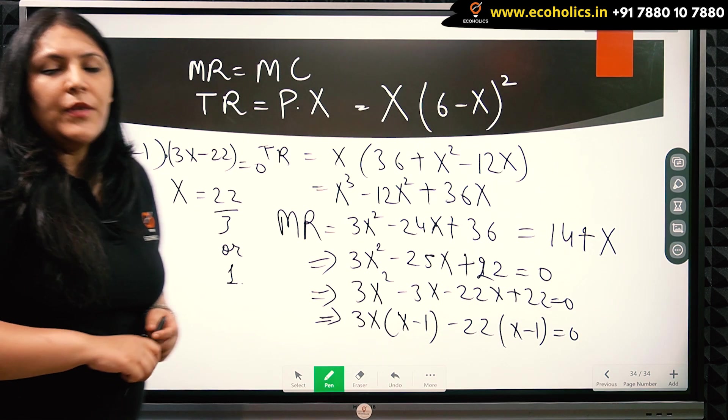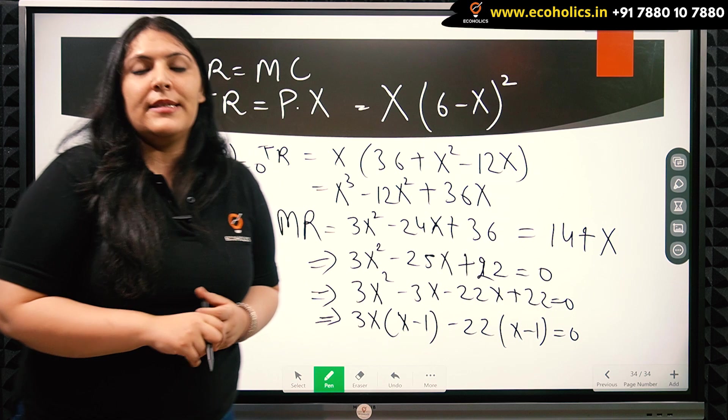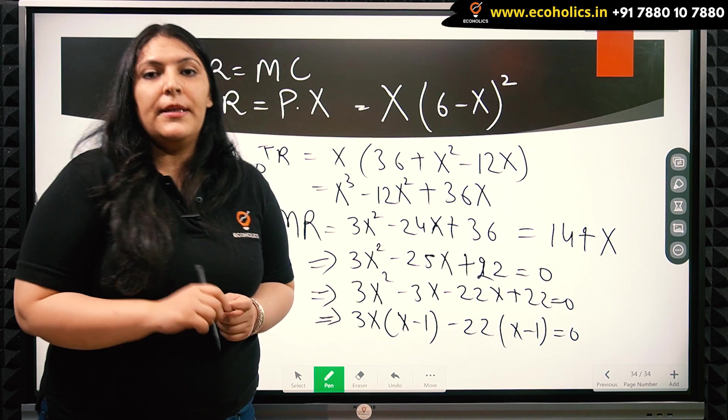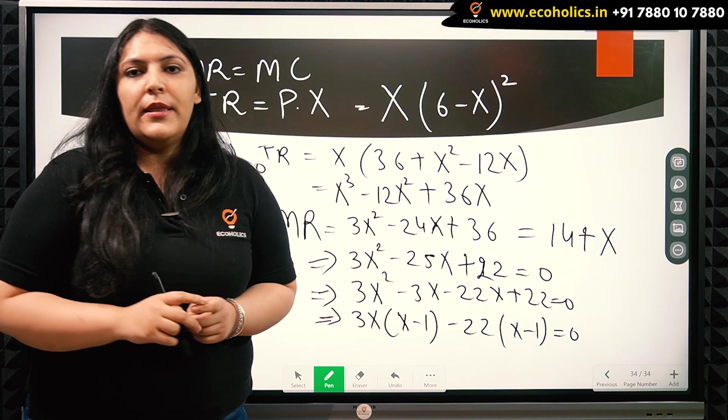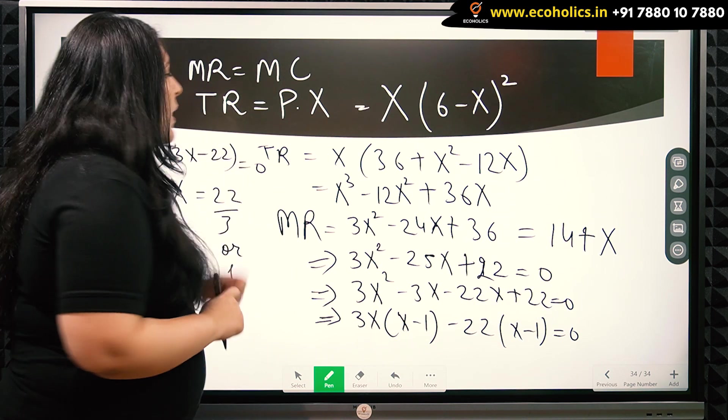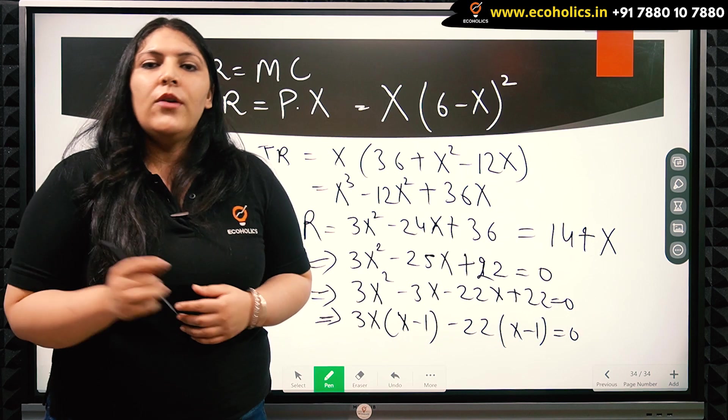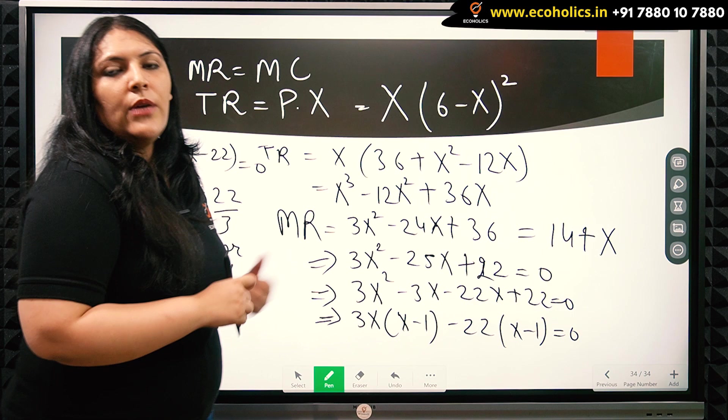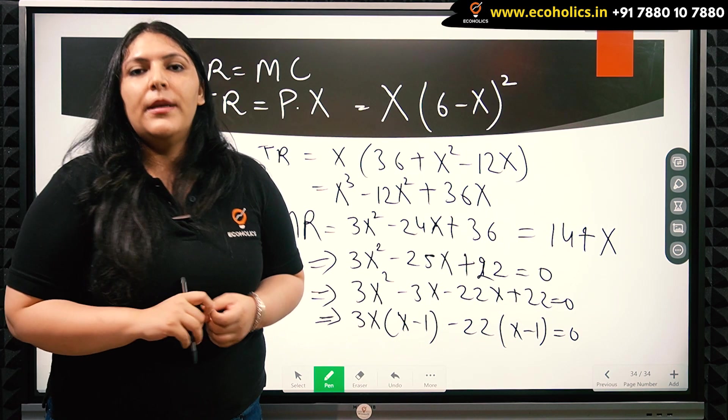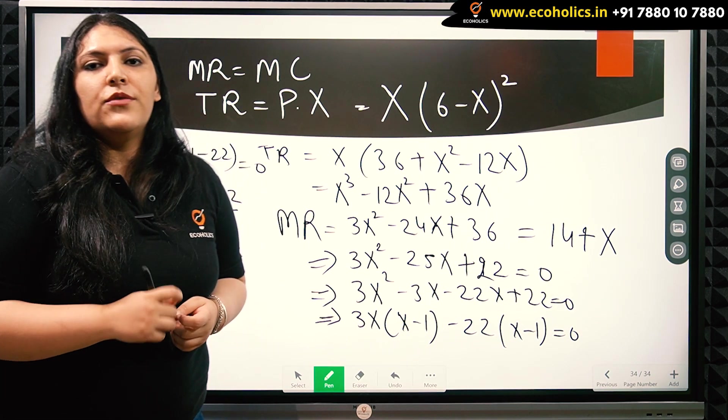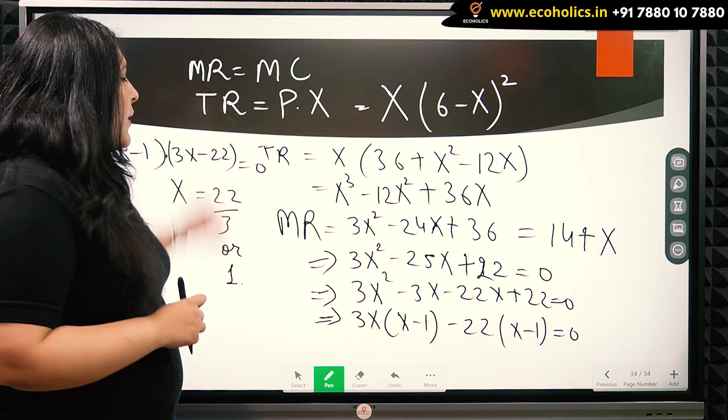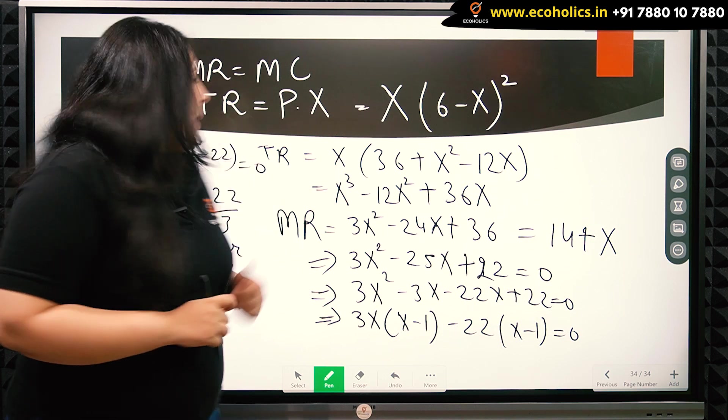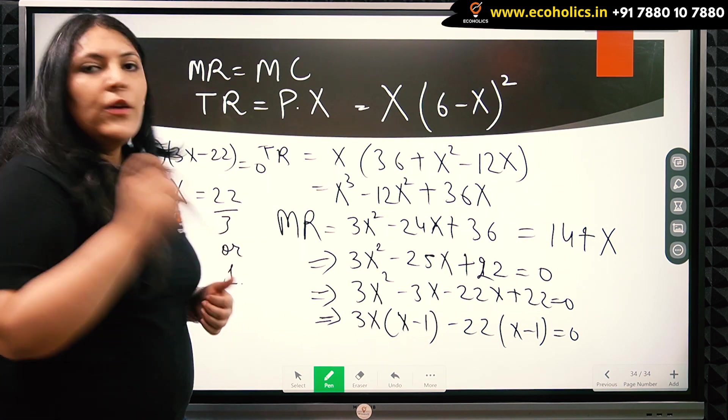So from this numerical, we get two values of x. How do we understand which value is acceptable and which value we drop? So we have two methods. The first method is to use the second order derivative of the total revenue and find out which value leads to a maxima or a minima. The second method is to find out which value gives the highest profits. We will go for the first method.